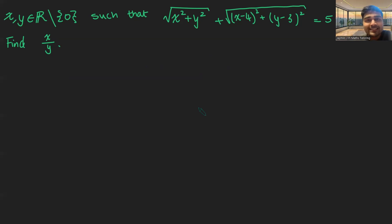Suppose we have non-zero real numbers x and y, such that the square root of x squared plus y squared plus the square root of x minus four squared plus y minus three squared is five. We want to find the ratio of x over y.